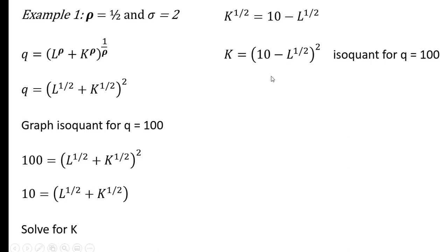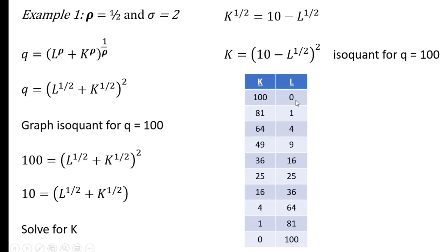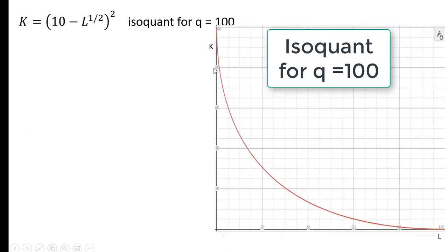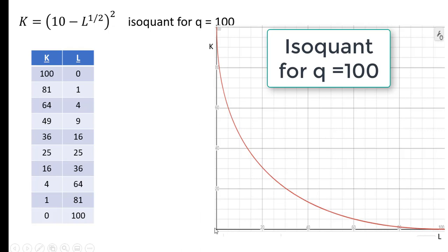So to graph this equation, we'll plug in various values for L. So if L is 0, we'll solve this. k will be 100. If L is 1, k will equal 81, and so on. So here's a bunch of different capital labor combinations that will give exactly 100 units of output. We could take these values here and plug it into our production function, and q should equal 100 if we did our math right. The graph of that looks something like this. So units of capital on the vertical axis, units of labor on the horizontal axis.